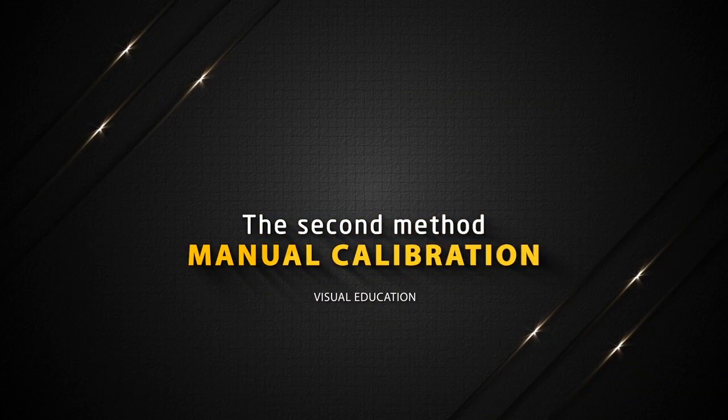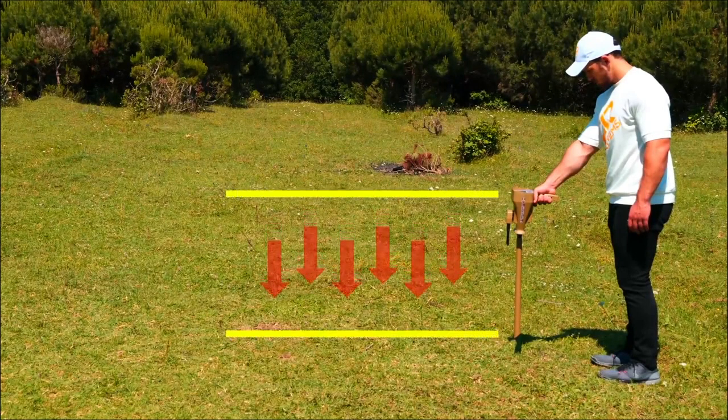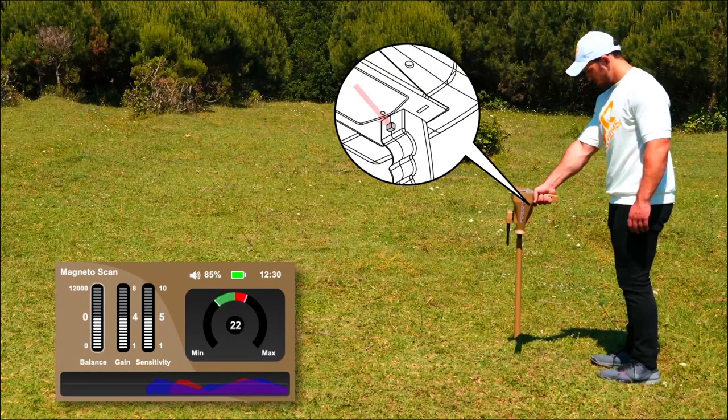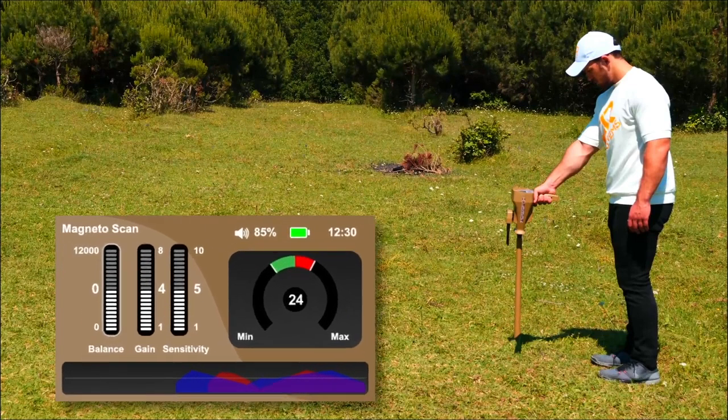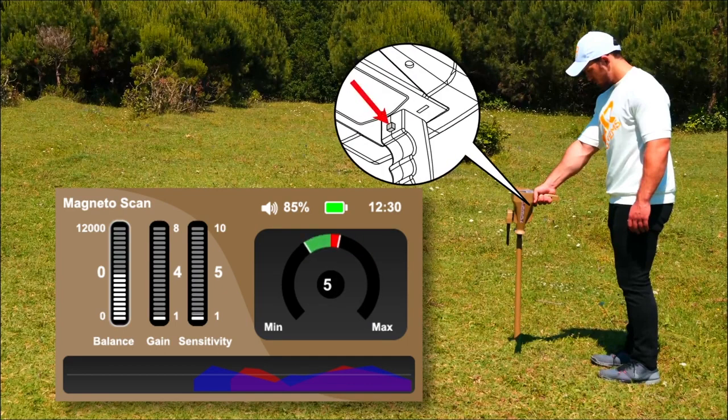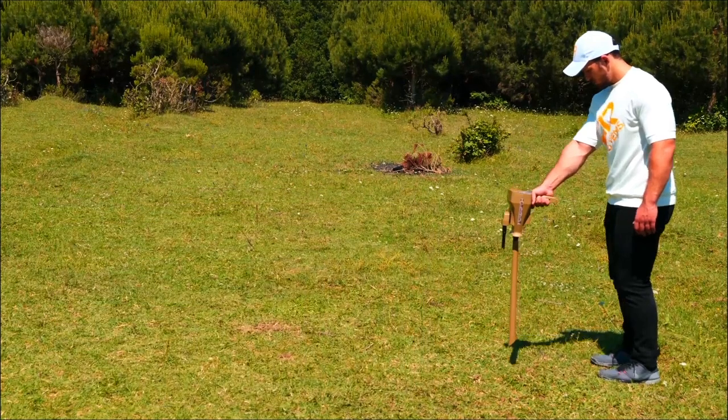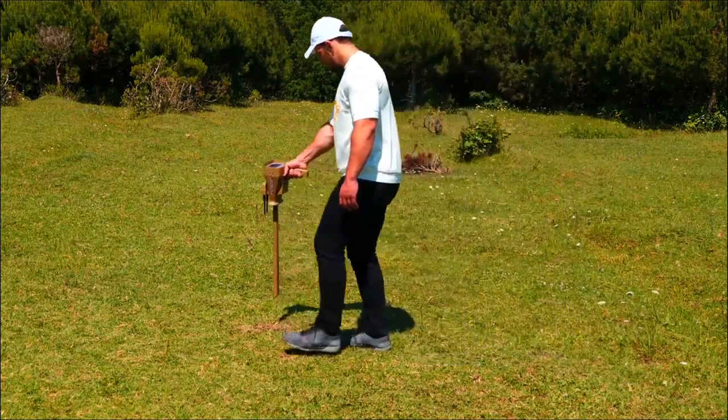The second method is manual calibration. Hold the device by the handle perpendicular to the floor. The device will beep continuously. Press the grip key to take the default balancing value of the indicator. When the device sound stops, the balancing is done. If the sound continues, the sensitivity indicator and the gain indicator must be reduced by the down arrow. And press the grip key every time the sensitivity and gain are changed until the sound stops. So the balancing process has been completed. Keep the previous position and move to the right and left to start the search for the target.